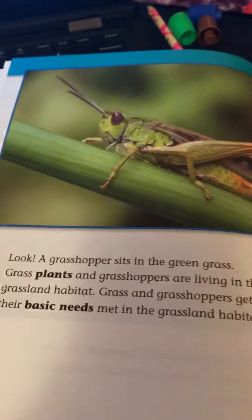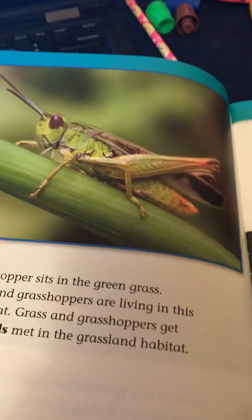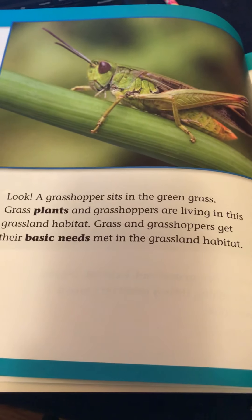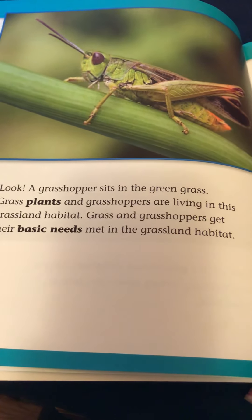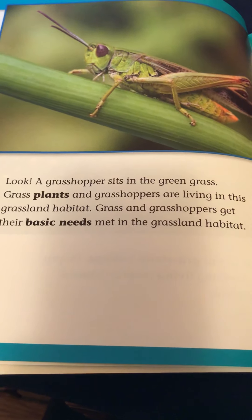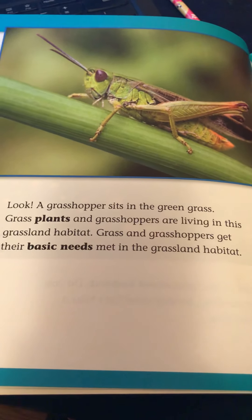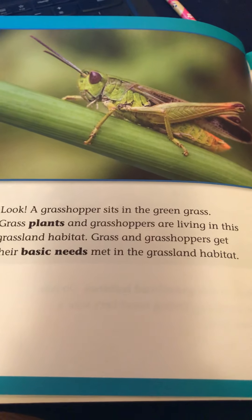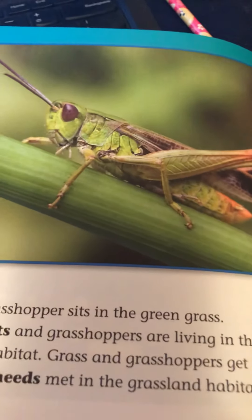A grasshopper sits in the green grass. Grass plants and grasshoppers are living in this grassland habitat. Grass and grasshoppers get their basic needs met in the grassland habitat.